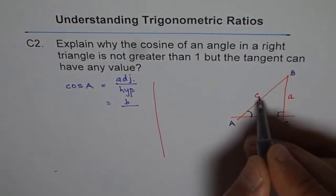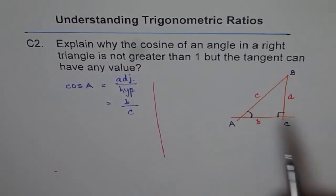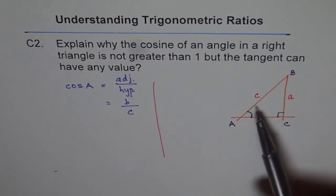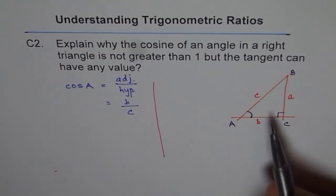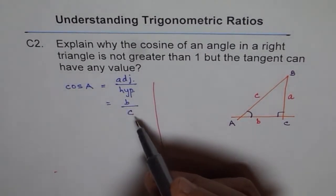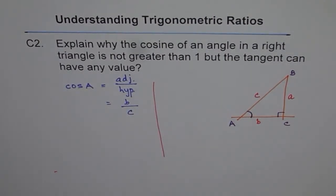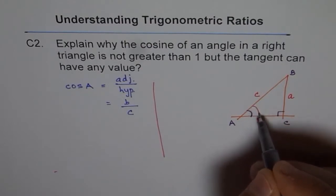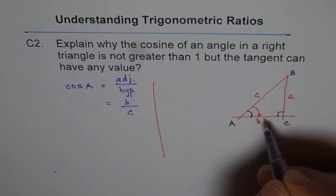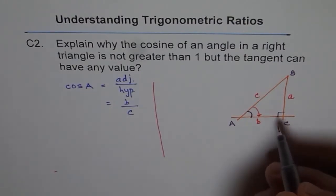The adjacent side to angle A is AC, which is side b, over the hypotenuse, which is side c. If you consider any right triangle, you know c is the longest side — c is always greater than b. Since c is greater than b, the denominator is greater than the numerator, so we get a fraction which is less than 1. In a triangle, cosine has to be less than 1. When the triangle flattens to 0 degrees, c equals b and cosine becomes 1, so 1 is the closest value cosine can reach.